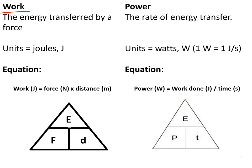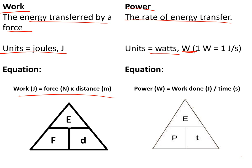Work done is the energy transferred by a force. It is measured in joules and the equation is: work done = force (in newtons) × distance (in metres). Power is the rate at which energy is transferred, measured in watts. One watt is one joule of energy transfer per second, and the equation is power = work done ÷ time. Make sure your time is in seconds.